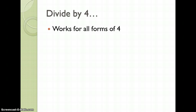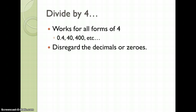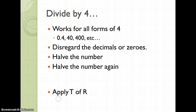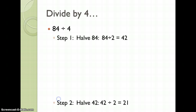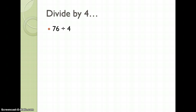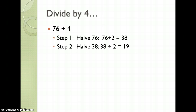To divide by 4 works with all forms of 4, just like multiplication did — so 0.4, 40, 400, etc. We're going to disregard the decimals or zeros, halve the number and then halve it again, applying the test of reasonableness for our final step. So 84 divided by 4: halve 84 to get 42, then halve 42 to get 21, and we're done. For 76 divided by 4: halve 76 to get 38, then halve 38 to get 19, and we're done.